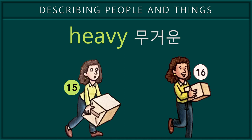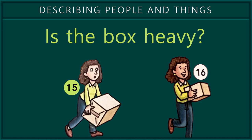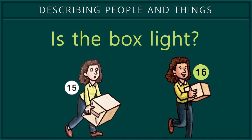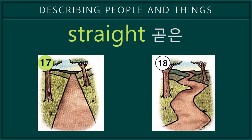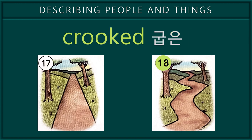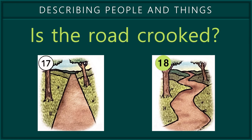15. Heavy. Is the box heavy? 16. Light. Is the box light? 17. Straight. Is the road straight? 18. Crooked. Is the road crooked?